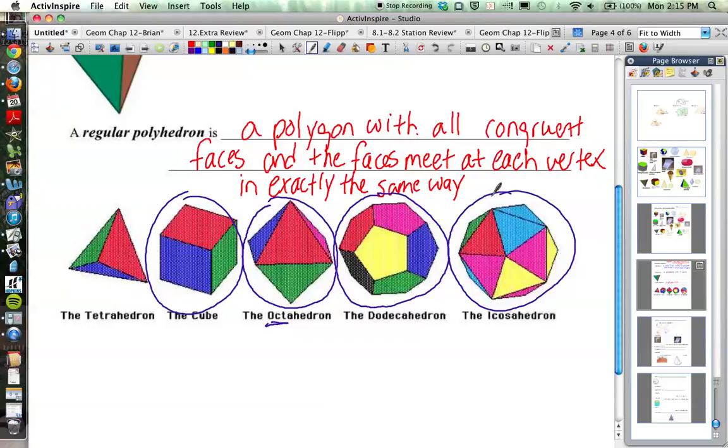And so if you look at all of those, if you look at any particular vertex, so if you take a look at this vertex here, or this vertex here, or this vertex, or this vertex, look at all of the places where basically the shape has a little point to it. All of those vertices on the same shape all have the same number of faces meeting in the same way.